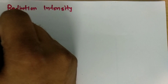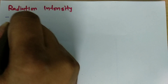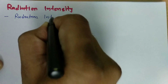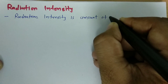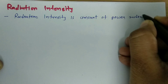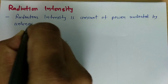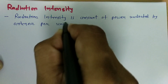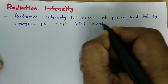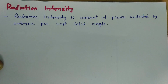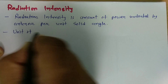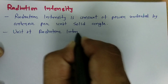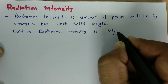Radiation intensity is the amount of power radiated by an antenna per unit solid angle. The unit of radiation intensity is watt per steradian.